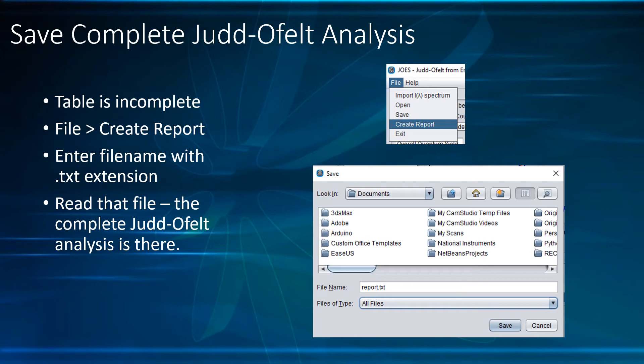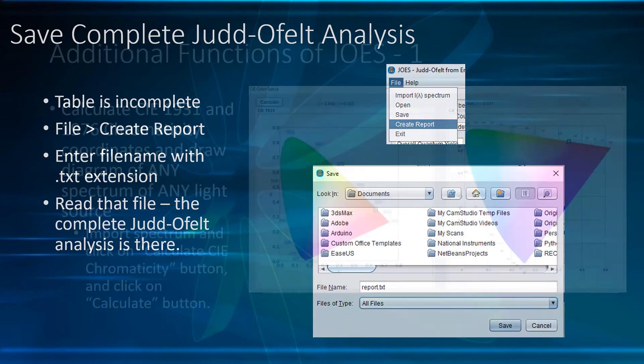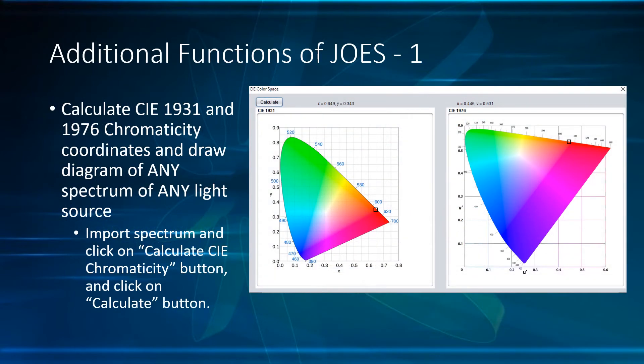The program has some additional features. The first one is the Chromaticity Analysis. It can calculate CIE coordinates and draw diagrams from the spectrum of any light source, not just Europium.